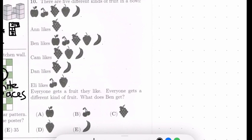We're on to number ten. There are five different kinds of fruit in a bowl. Anne likes grapes. Ben likes apples, cherries, grapes, strawberries, and bananas. Cam likes grapes, strawberries, and bananas. Dan likes grapes and bananas. And Eli likes cherries and strawberries. Everyone gets a fruit they like. Everyone gets a different kind of fruit. What does Ben get? Let's start with some things that are obvious. Anne only likes one type of fruit, so Anne has to get grapes. Anne got grapes. That means Ben obviously did not get grapes.